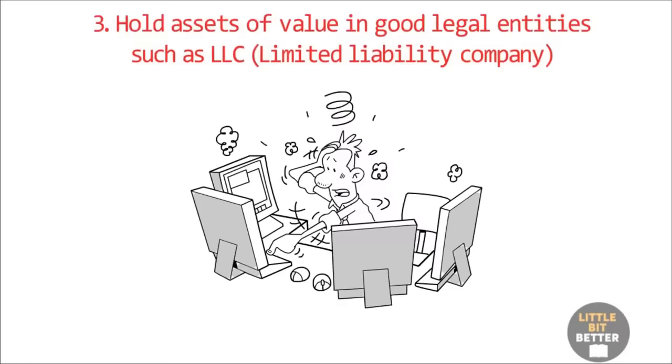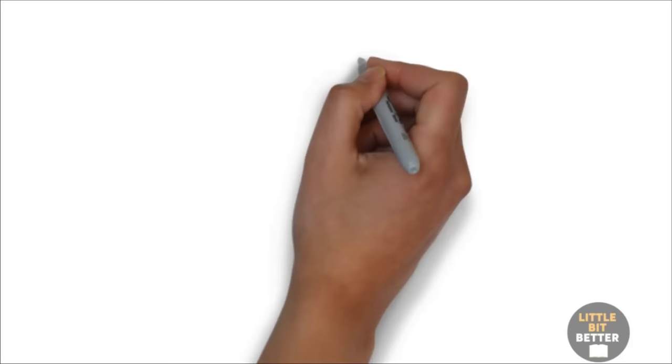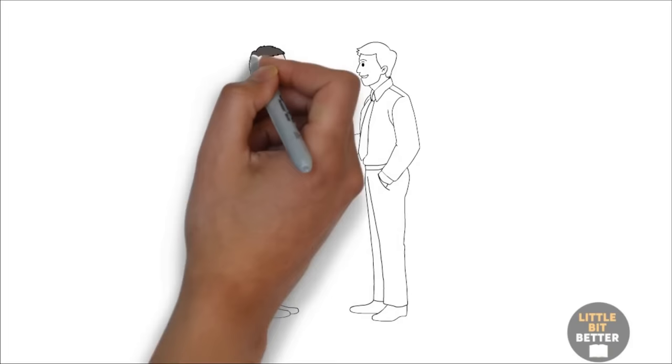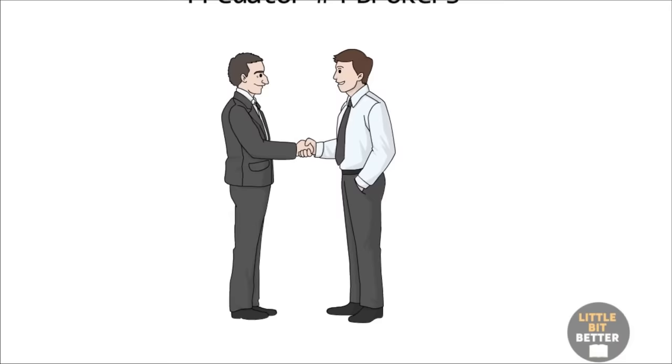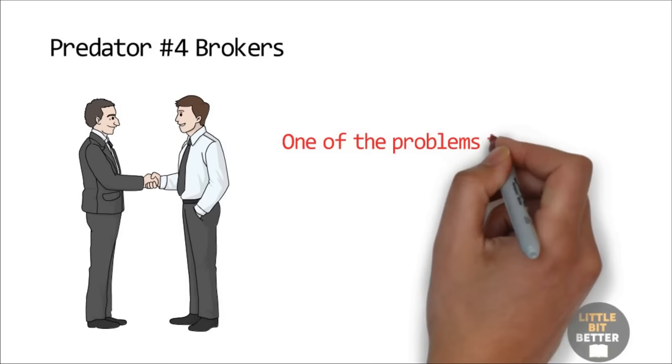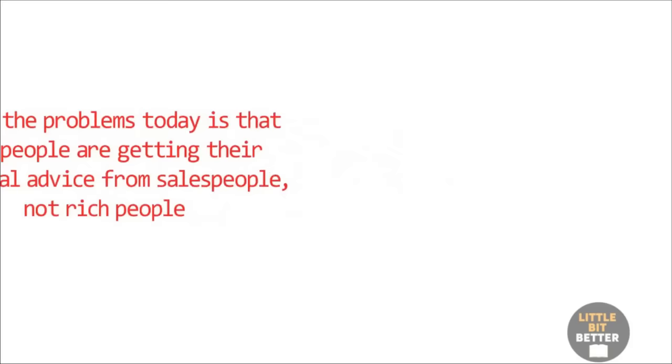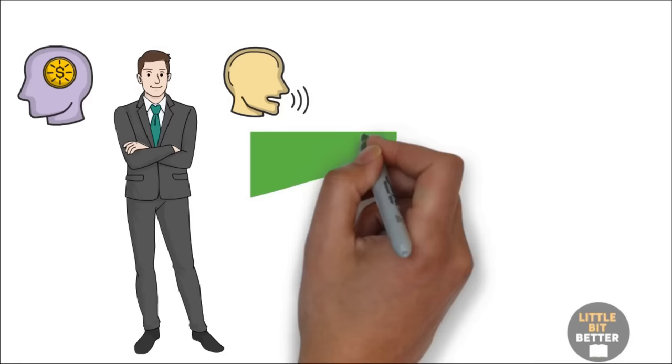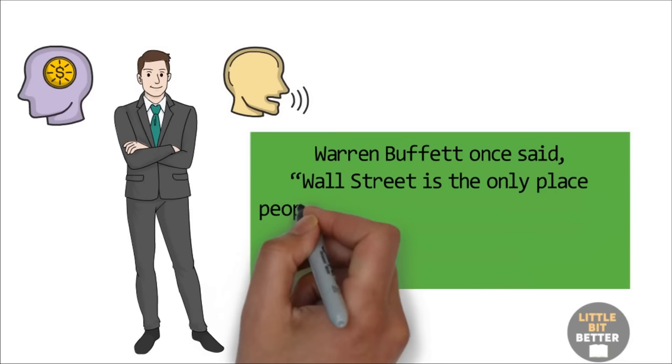Predator number four, brokers. Broker is another word for salesperson. In the world of money, there are brokers for stocks, bonds, real estate, mortgages, businesses, etc. One of the problems today is that most people are getting their financial advice from salespeople, not rich people. If you meet a rich broker, you need to ask if the broker got rich from his or her sales ability or financial ability. Warren Buffett once said, Wall Street is the only place people drive to in their Rolls Royce to take advice from people who ride the subway.